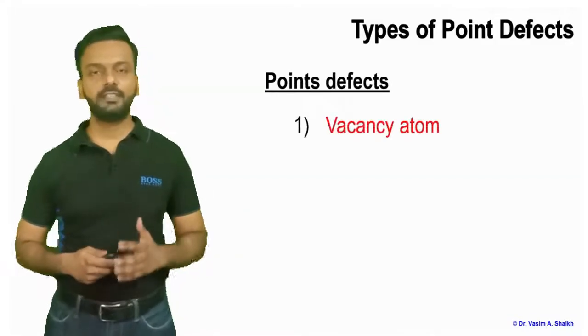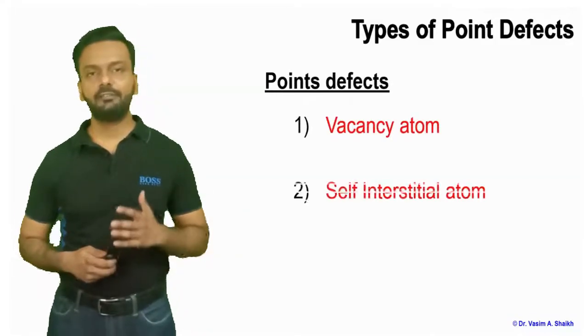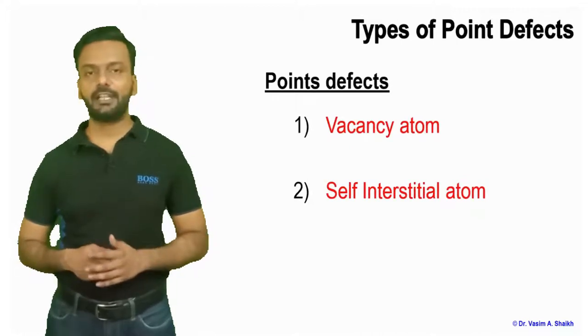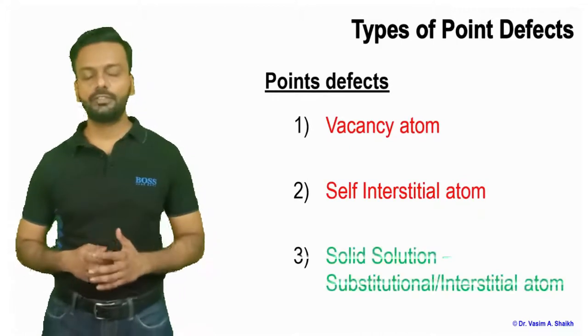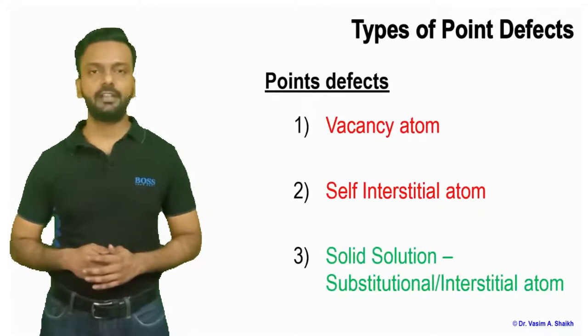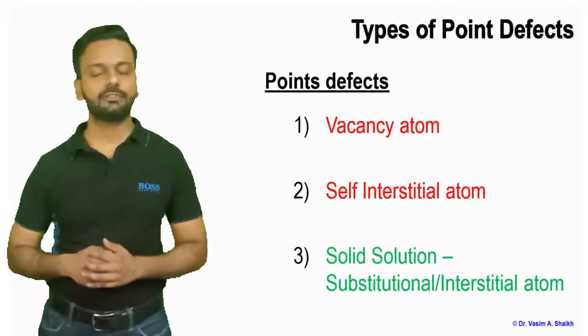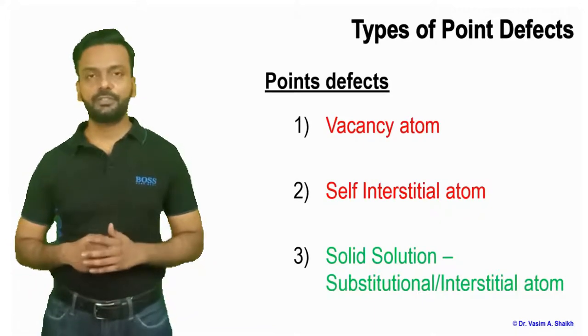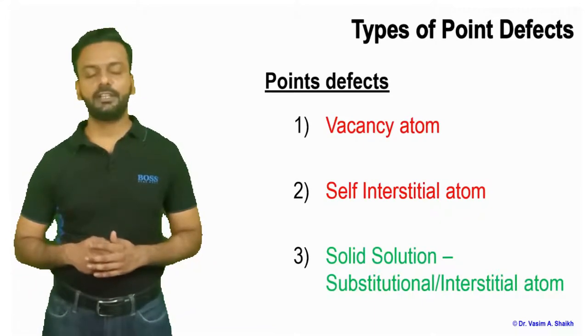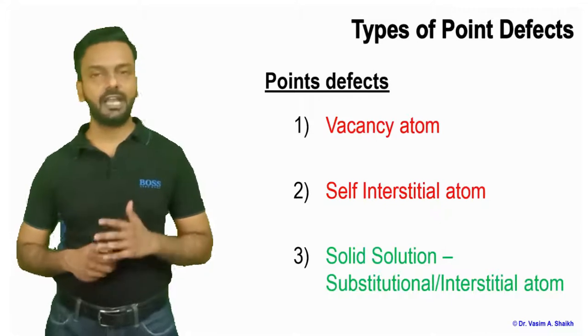In the previous video, we discussed about types of point defects. Let us just list these types: we covered the vacancy atom and the self-interstitial atom. The third one is solid solution, and there are two types — substitutional solid solution and interstitial atom.